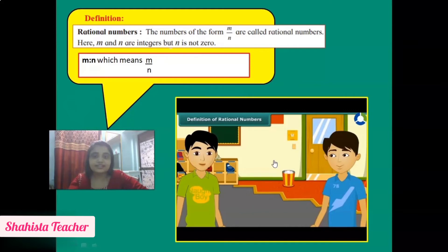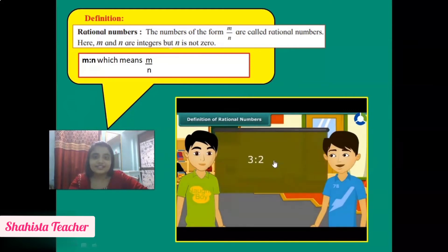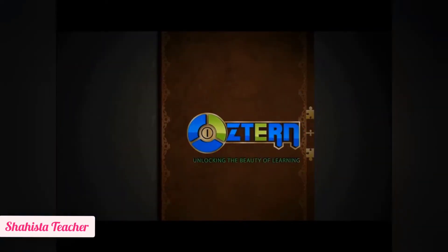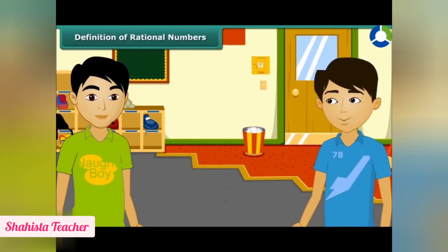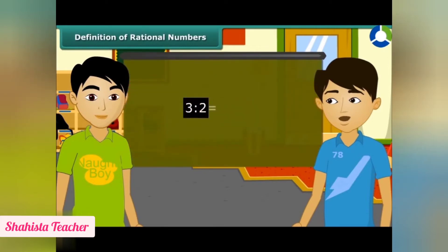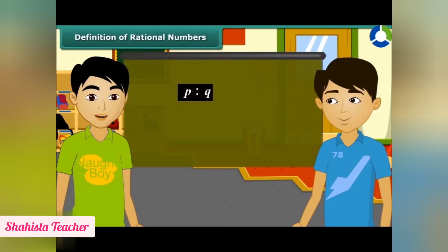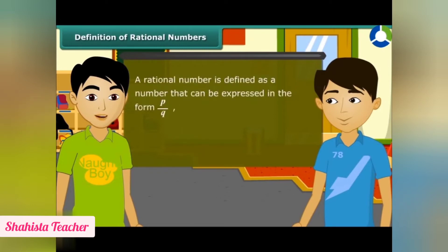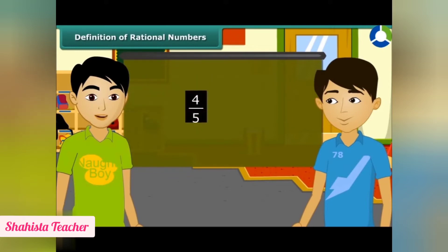The word rational arises from the term ratio. A ratio like 3 is to 2, which can also be written as 3/2, is a rational number. Similarly, the ratio of two integers P and Q, where Q is not equal to 0, can be written as P/Q. A rational number is defined as a number that can be expressed in the form P/Q, where P and Q are integers and Q is not equal to 0. For example, 4/5 is a rational number because it is in the form P/Q where Q is not equal to 0.